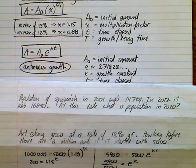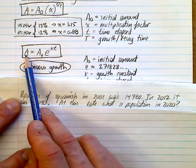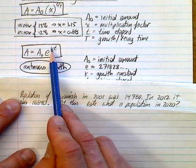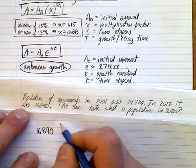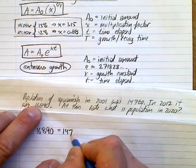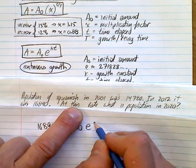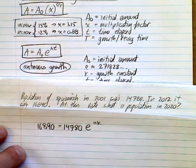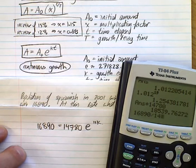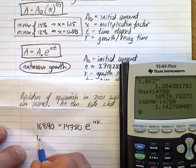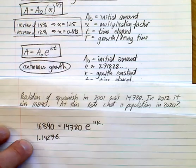Now, that is using this original function here. Notice how we have to find the growth rate as well. Well, what's the difference if we use this other one? So, you have that, you have that, and you have time. You don't have the K. So, we need to do the same kind of thing. We work backwards here. 16,890 is equal to 14,780 E to the power of, what is it from 2001 to 2012 is 11K. Now, if you divide the 16,890 by 14,780, you get 1.14276 equals E to the 11K.